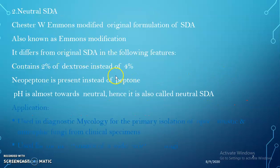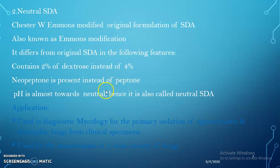Second, we can see Neutral SDA. It is a modification of the normal SDA, modified by Chester W. Emmons — called the Emmons modification. It differs from the original SDA in the following features: it contains only 2% dextrose, neopeptone is present instead of peptone, and the pH is almost neutral. It can be used in diagnostic mycology for the primary isolation of opportunistic and dimorphic fungi from various clinical specimens, and for maintenance of a wide variety of fungi.